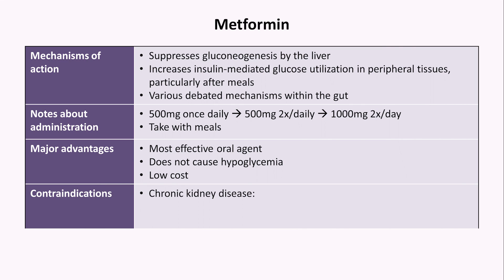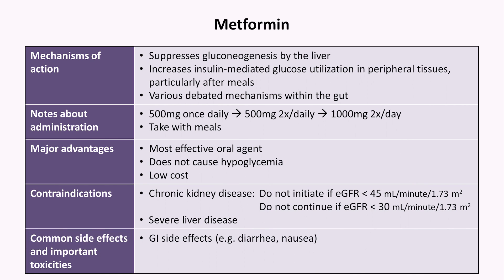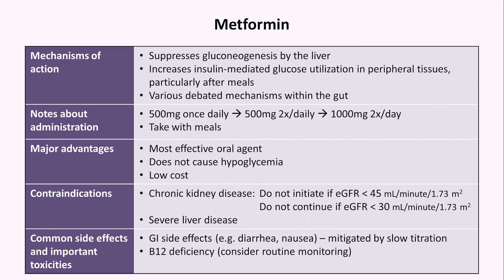Contraindications to metformin include chronic kidney disease. It's recommended to not initiate it if the patient's estimated GFR is less than 45, and to discontinue it once their GFR drops below 30. Metformin is also contraindicated in severe liver disease. By a large margin, the most common side effects are diarrhea and nausea, which can be mitigated by a slow up-titration of dose over several weeks. Although frequently said to occur only at initiation, these side effects are also a large part of metformin non-adherence. Metformin is also associated with vitamin B12 deficiency. There has been a persistent concern about metformin causing lactic acidosis, as fenformin did, but after much study over decades, this concern appears to be commonly overstated and the side effect is actually quite rare.